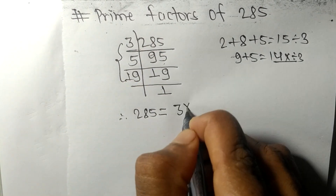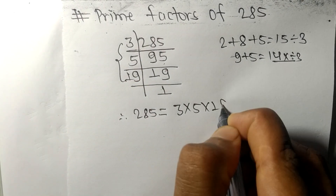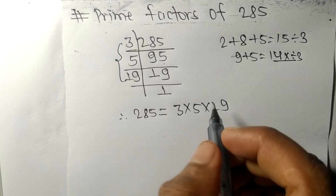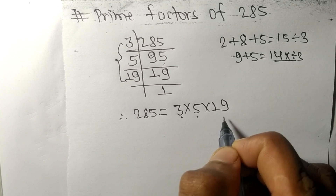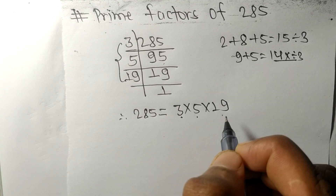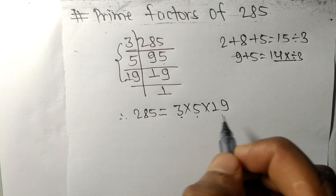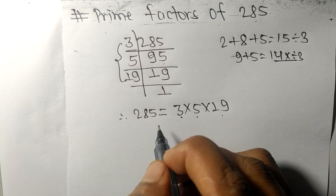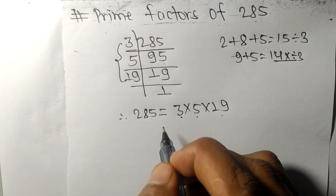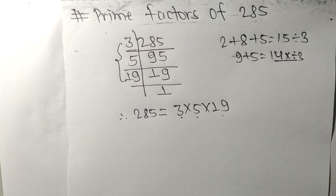So 285 equals 3 times 5 times 19, and therefore 3, 5, and 19 are the prime factors of 285. That's all for today — thanks for watching!